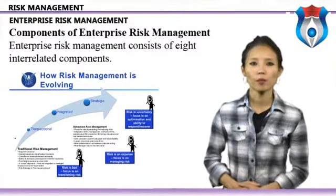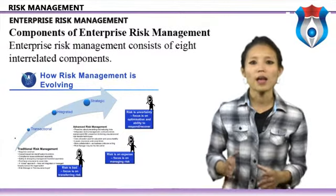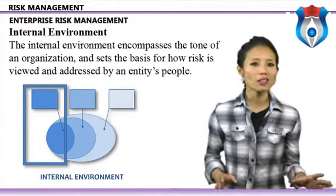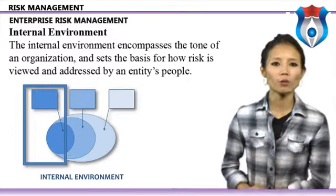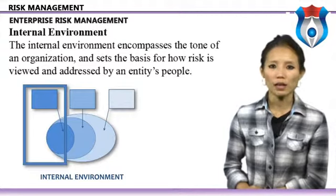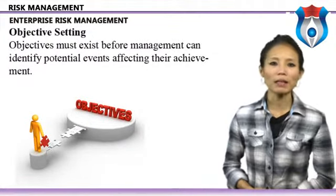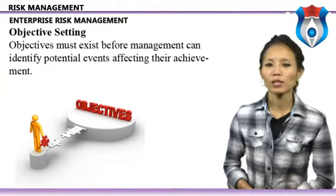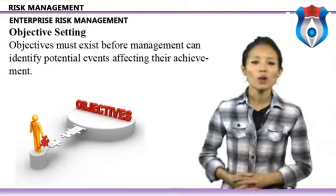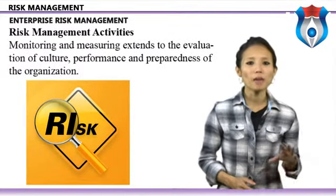Enterprise risk management consists of eight interrelated components derived from how management runs an enterprise. The internal environment encompasses the tone of an organization and sets the basis for how risk is viewed, including risk management philosophy, risk appetite, integrity, ethical values, and the operating environment. Objective setting: objectives must exist before management can identify potential events affecting their achievement. ERM ensures management has a process to set objectives aligned with the entity's mission and risk appetite.